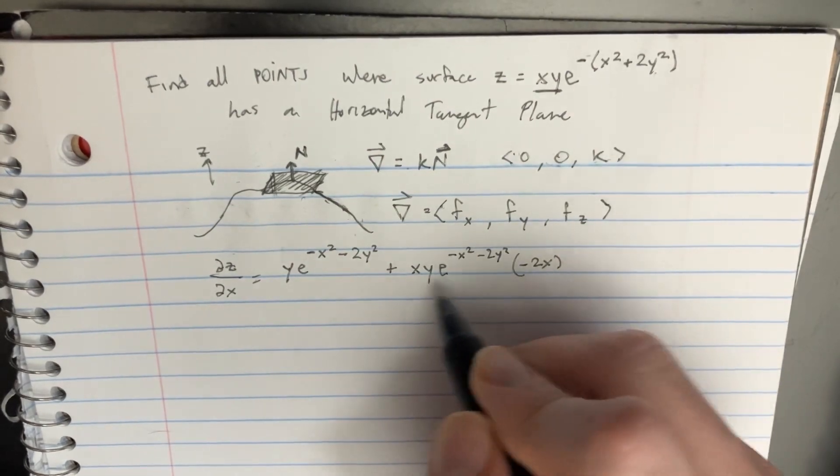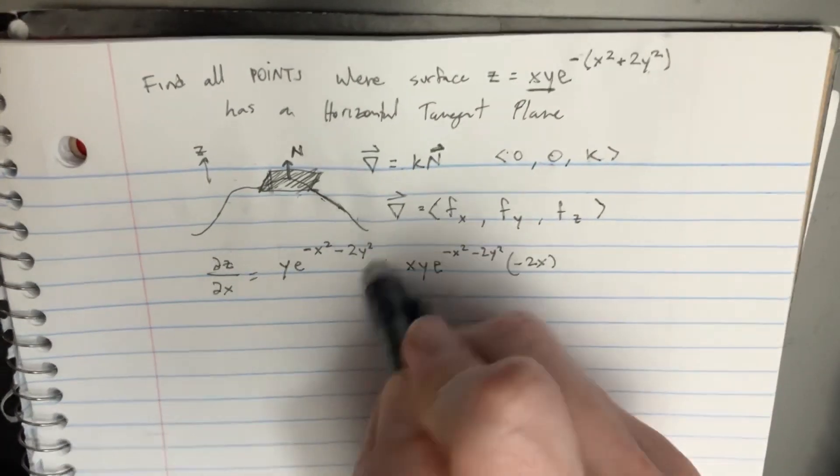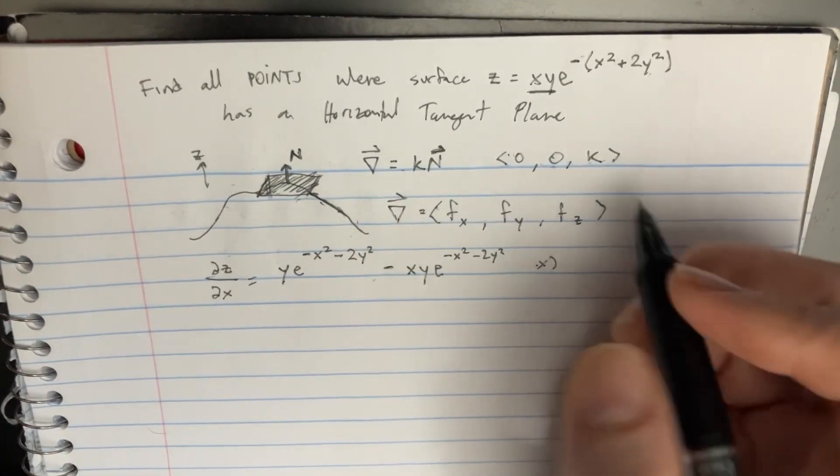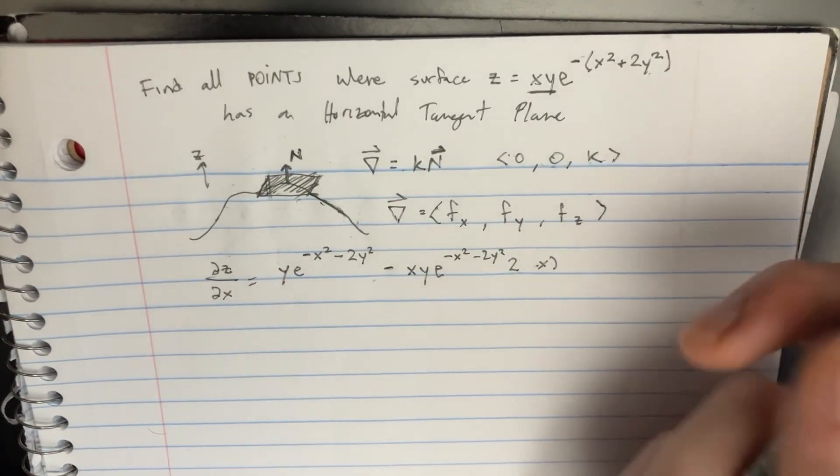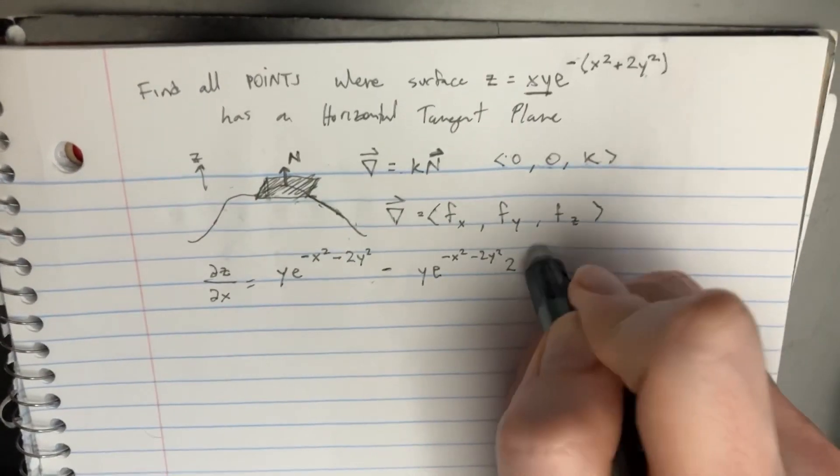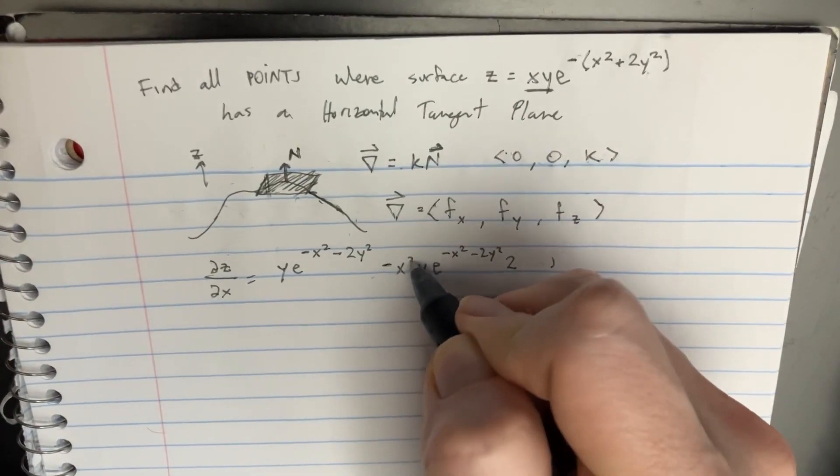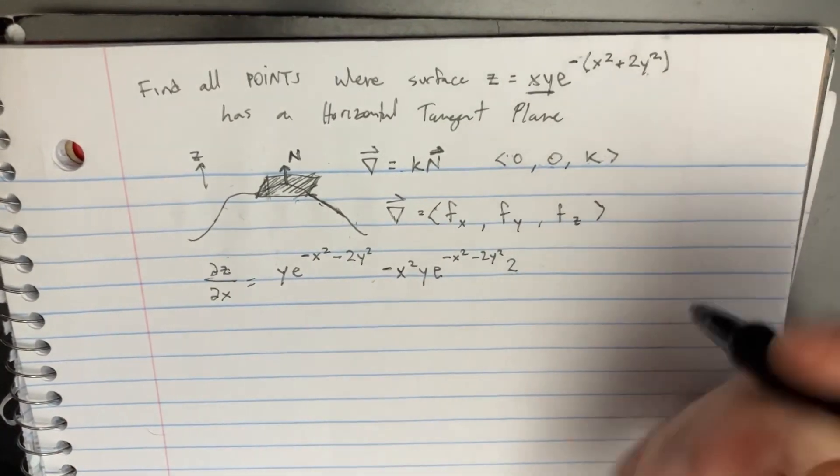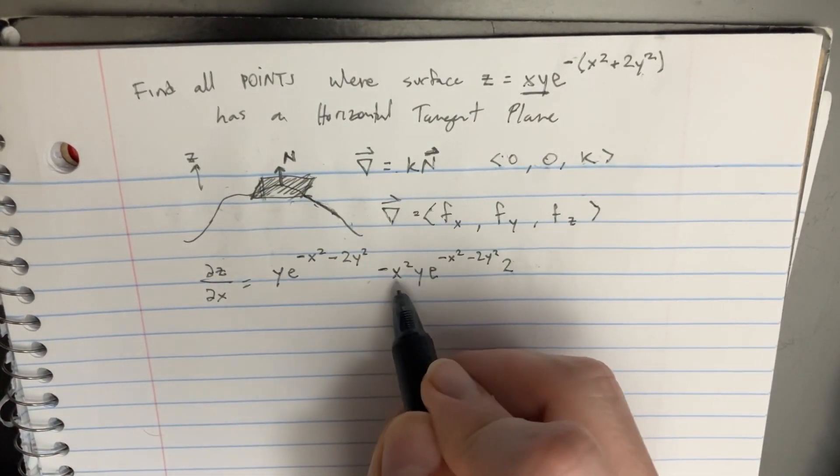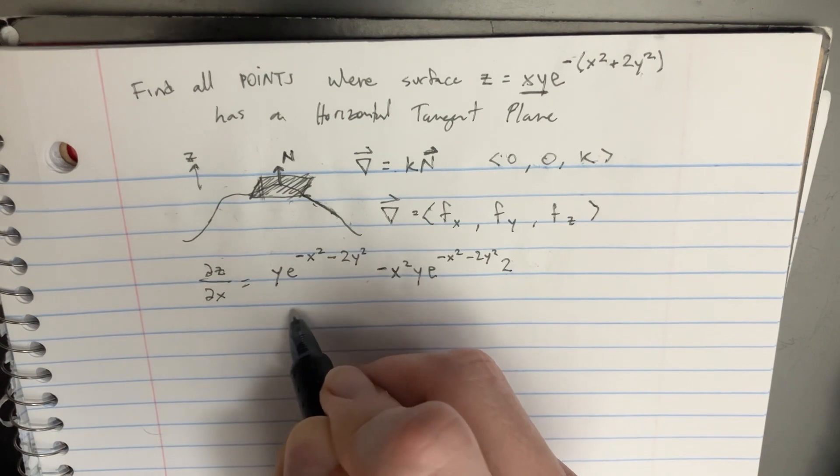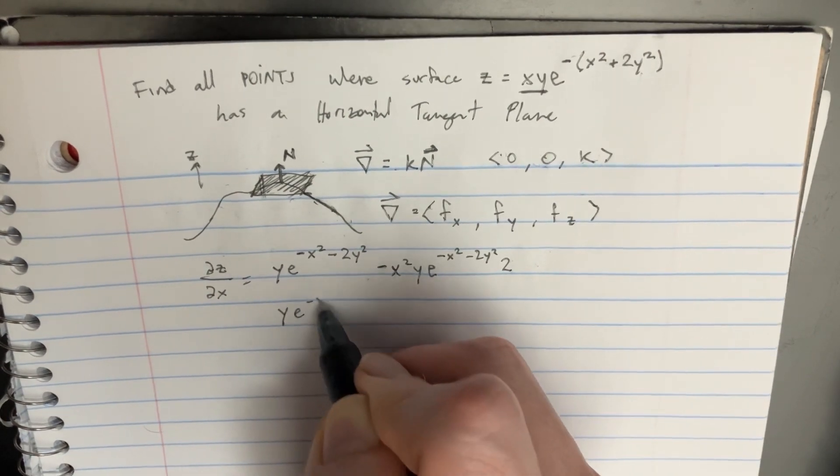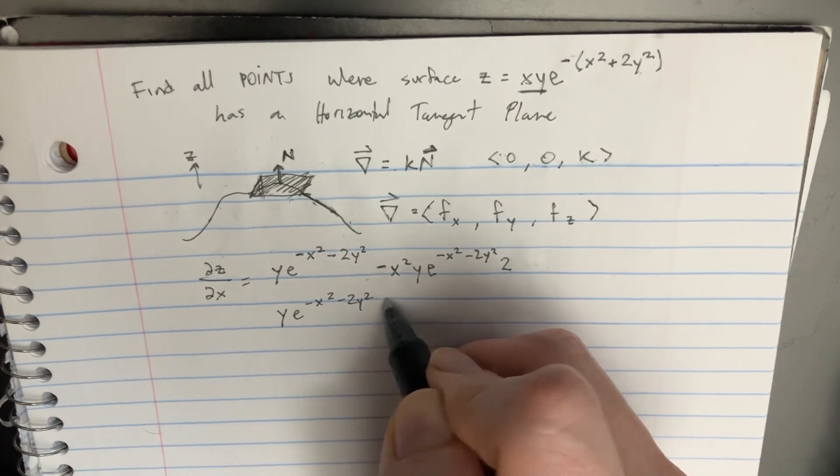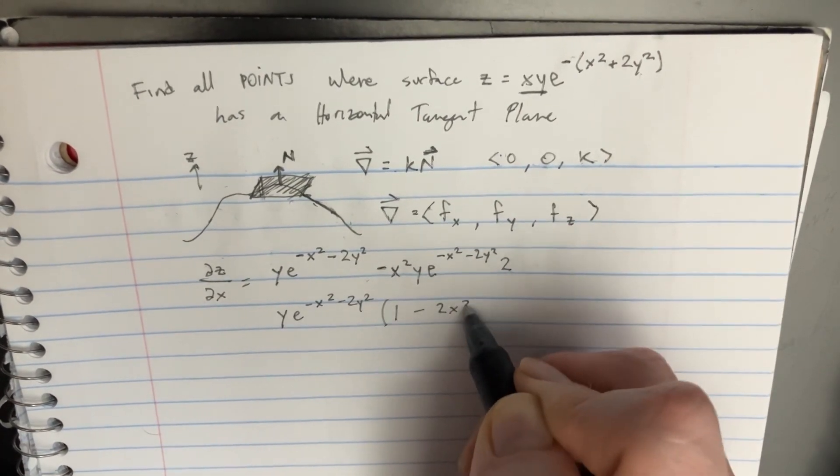We can kind of rearrange this slightly. If I said that this was a negative, negative, and I'll put a 2, you know, somewhere around there. Then I'll make this x squared, x squared, because there's two of them. So we kind of have something like that. This can actually simplify a little further. We see it's y e to the negative x squared minus 2y squared. Then we can just go 1 minus 2x squared.